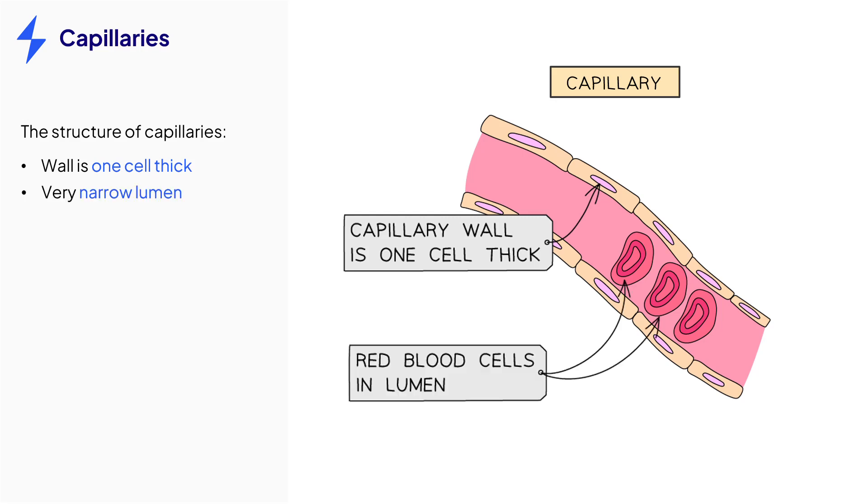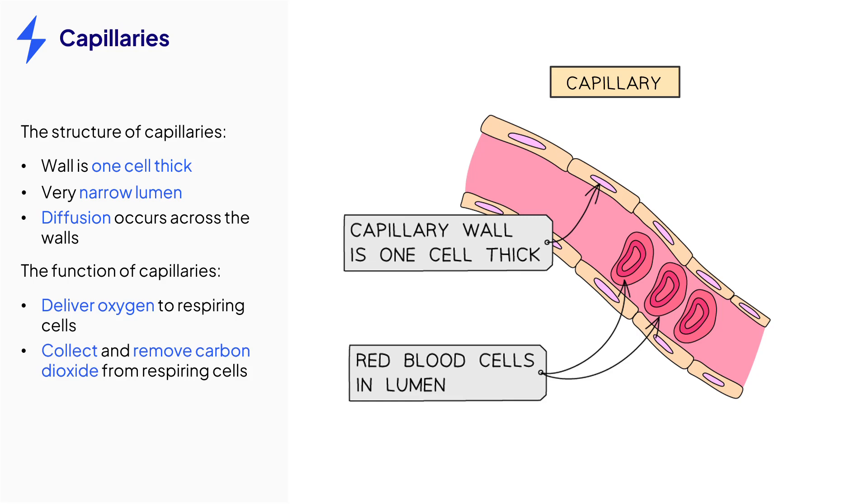Their lumen is very narrow and only allows for one red blood cell to squeeze through at a time, allowing diffusion to occur. They have very thin walls also, which helps diffusion to be as efficient as possible due to the short diffusion pathway. Their function is to deliver oxygen and other nutrients to the respiring cells and to collect and remove carbon dioxide and other waste products from these cells. You do need to know about the functions of the capillaries as well as their structure.